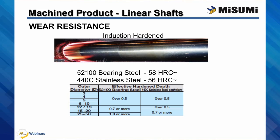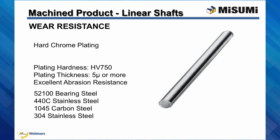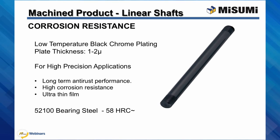The induction hardened linear shafts offered by Misumi are 52-100 bearing steel with a hardness of at least 58 HRC, and 440C stainless steel with a hardness of at least 56 HRC. Misumi offers hard chrome plating for our line of linear shafts. Hard chrome plating offers additional wear resistance along with increased abrasion resistance, and can be applied to induction hardened or non-hardened metals. Misumi also offers a low temperature black chrome plating for 52-100 bearing steel, which provides our highest corrosion resistance while maintaining very high precision tolerance. This coating has a thickness of about 1-2 microns.